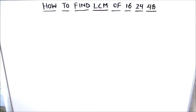Hello students, in this video we are going to learn how to find the LCM of 16, 24, and 48 using the prime factorization method. In the prime factorization method we divide numbers and find the factors of the number. LCM, as the name suggests, is the least common multiple of the three numbers — it is the number which is divisible by all three numbers fully without leaving a remainder.